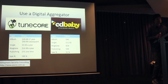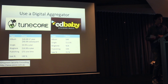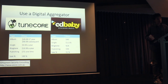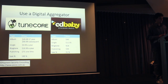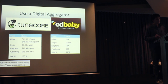With TuneCore you keep 100% of the sales. So if you get $0.69 from an iTunes download, you get $0.69 through TuneCore. They sign agreements with all the major services, you upload your music, and they distribute it automatically, collect the money on the back end, and pay you month to month. CD Baby is a different model — you pay more upfront for the album, but it's listed forever. However, they take 9% of your revenue, so $0.69 gets cut by the 9% they take off the top.